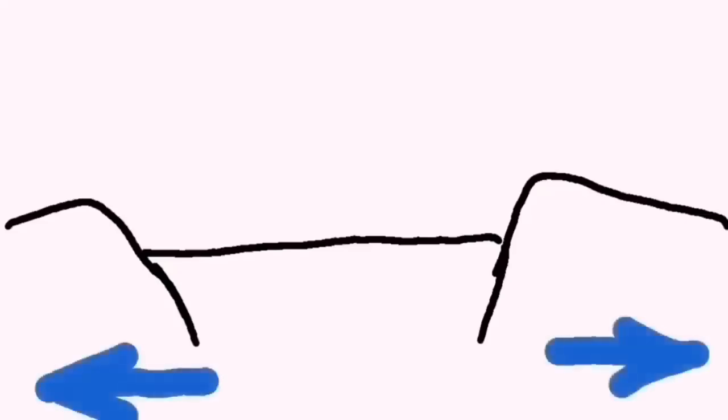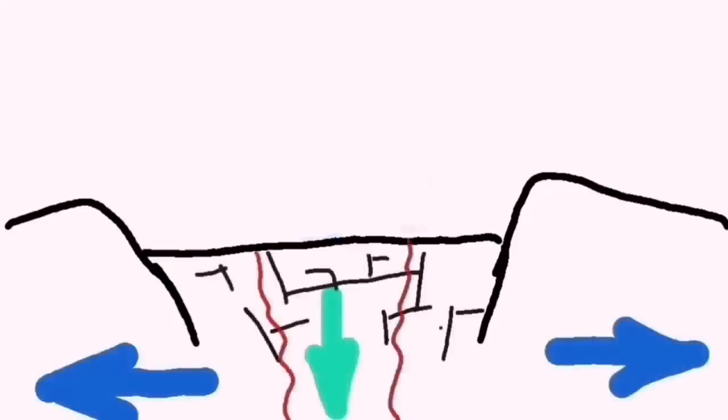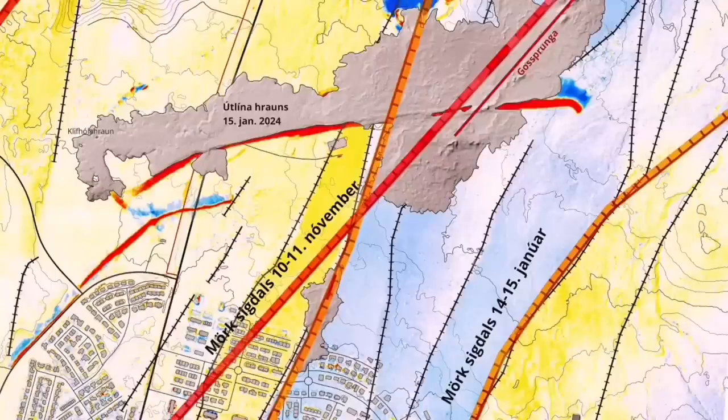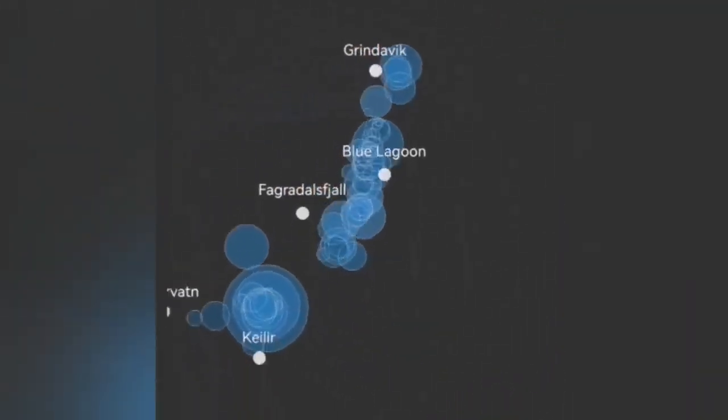This diagram shows that movement ripping apart of the land causes downfall of a block of rock and that creates cracks. Through the cracks, magma can rise and melt and create lava. Now this is a different situation.